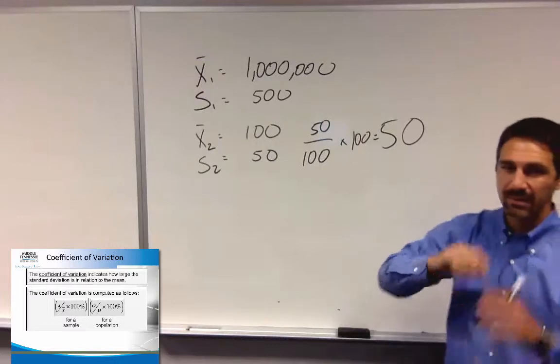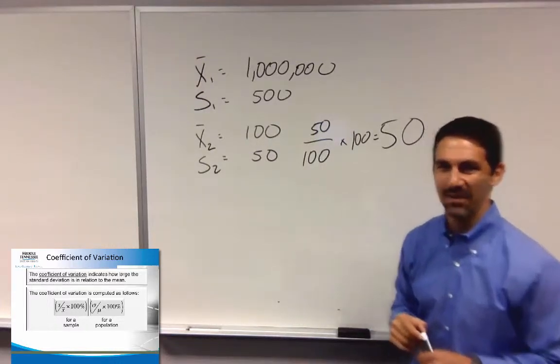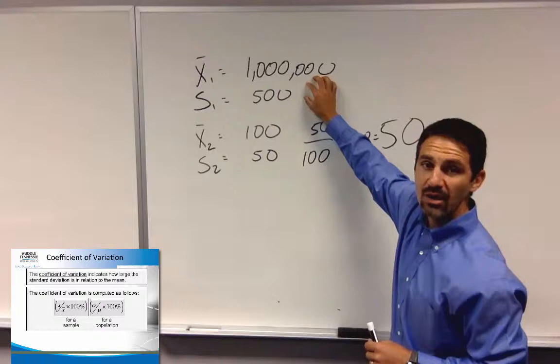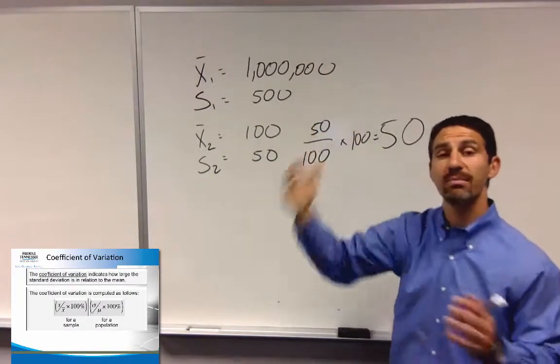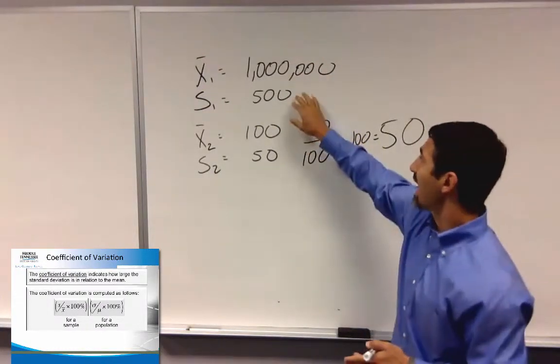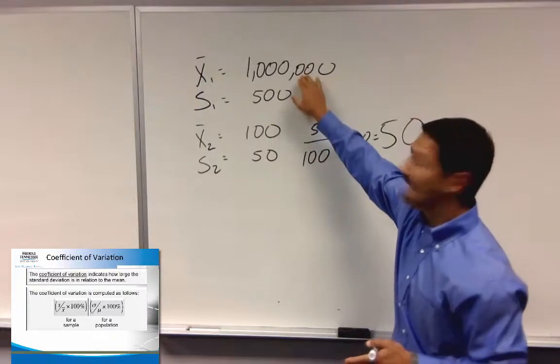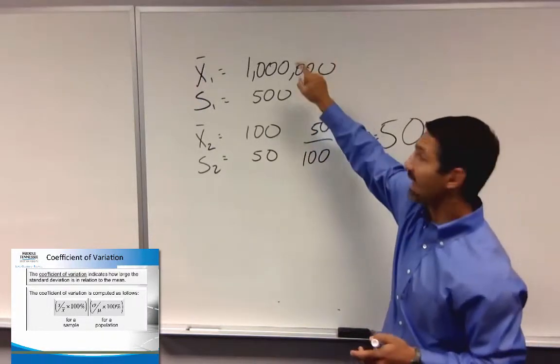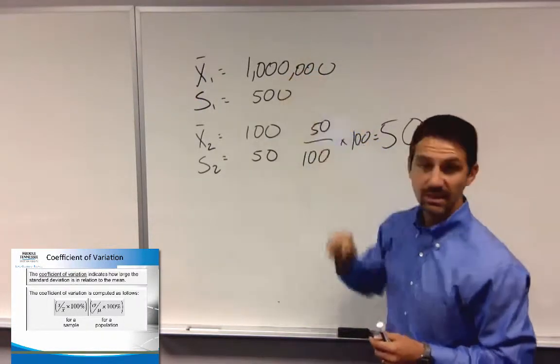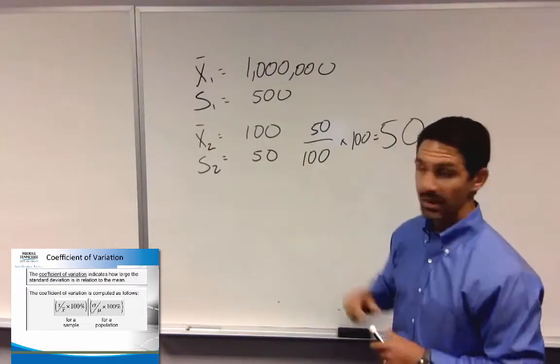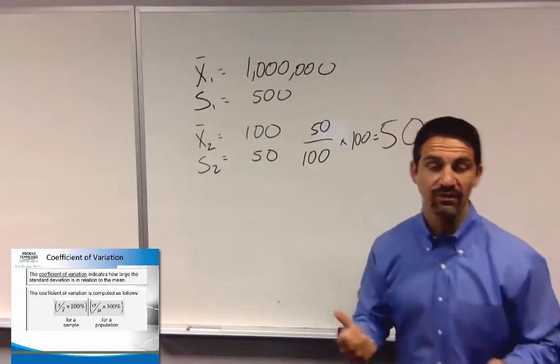And that tells you that you have a coefficient of variation that's at 50. Compare that to that one, and I'll let you guys do the math on that one. You'll see that this one would be a lot smaller. So in relation to the mean, you can see that this one is a lot smaller, which means less variability as it relates to the mean than this one down here. So that's a coefficient of variation.